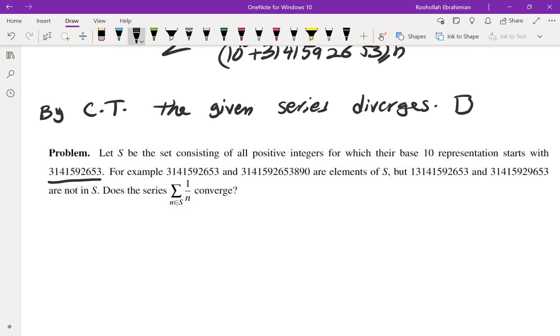For example, these numbers that start with 3141592653 are in S, but if you start from 1 and still put the 10-digit block, that would not be in S. Now the question is, does the sum of 1 over n, n in S, converge? And that would bring me to the end of this video.